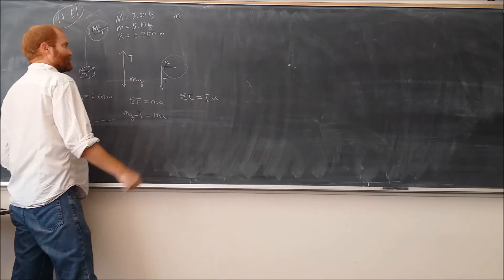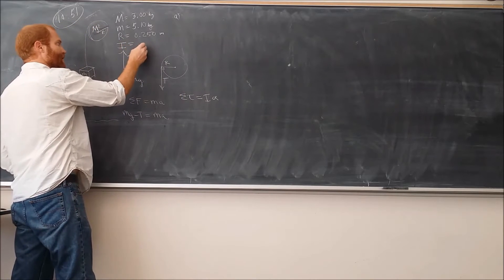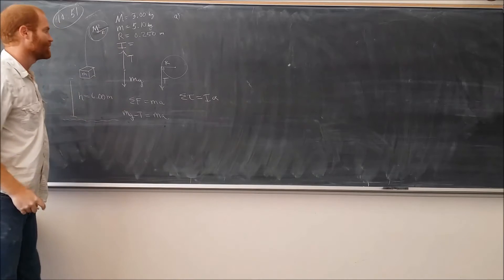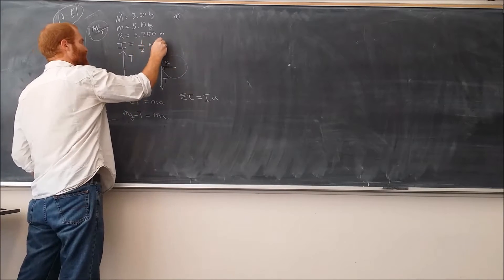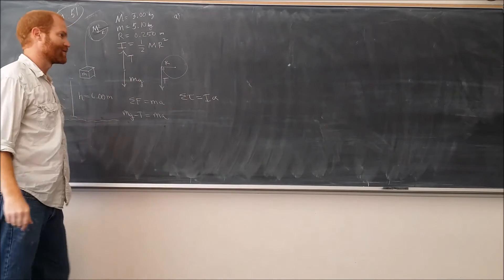Because this is a rigid object here, we can say that the moment of inertia of this object is equal to, it's a solid disk basically, so its moment of inertia, if you look it up into one of those tables, you'll get one half MR squared.